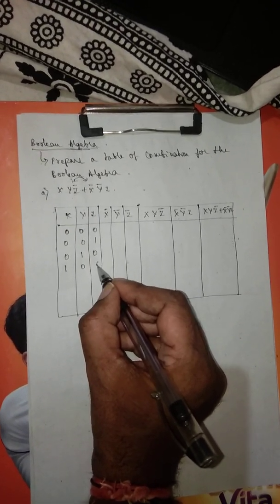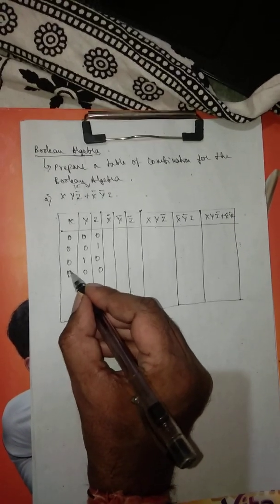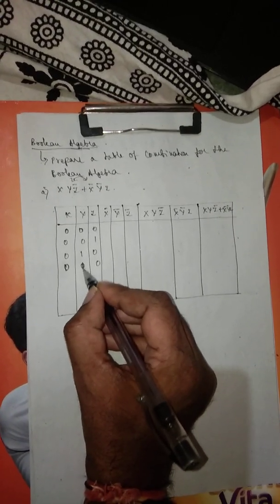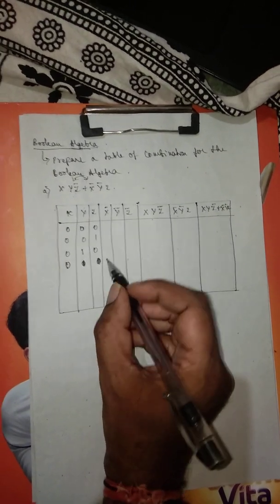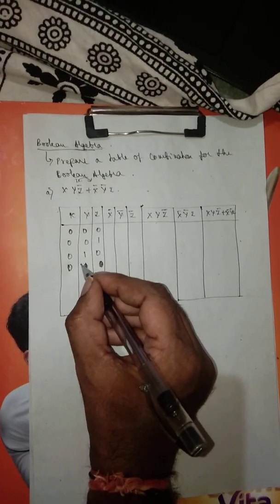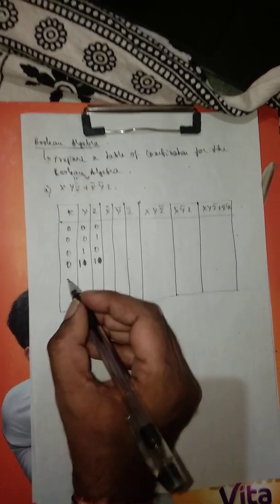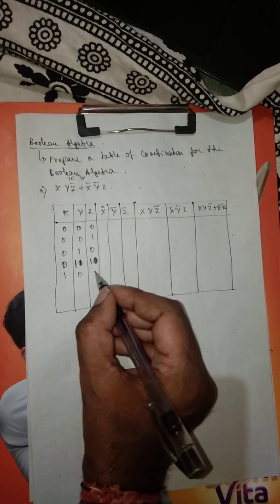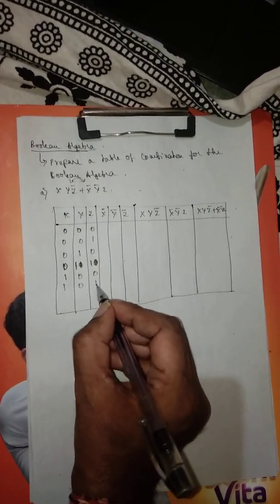Continuing the combinations: 0, 1, 1; then 1, 0, 1; then 1, 1, 0; and finally 1, 1, 1. So these are all eight binary combinations for the three variables x, y, z.